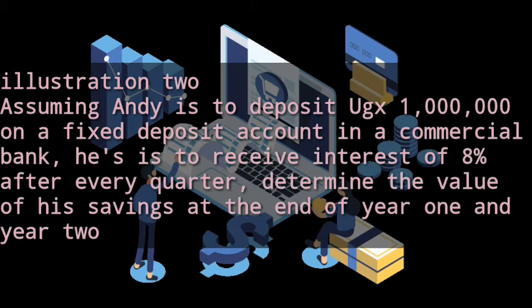Illustration: In time value of money, assuming Andy is to deposit one million on a fixed deposit account in a commercial bank, he is to receive interest of eight percent after every quarter. Determine the value of his savings at the end of year one and year two.